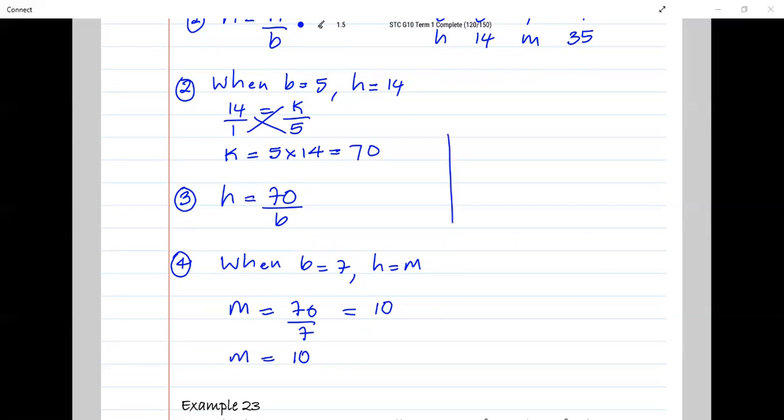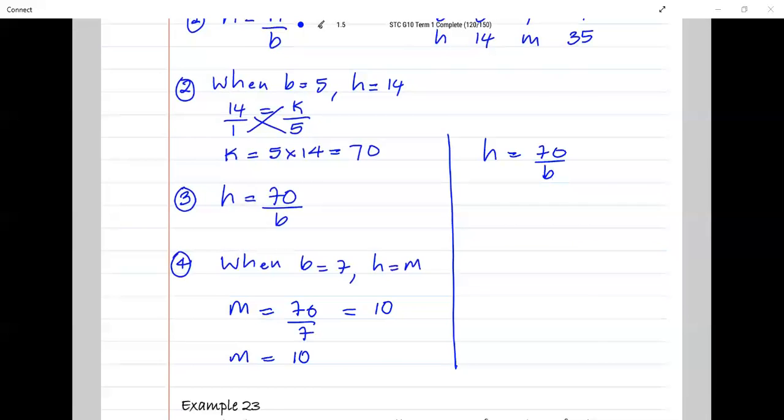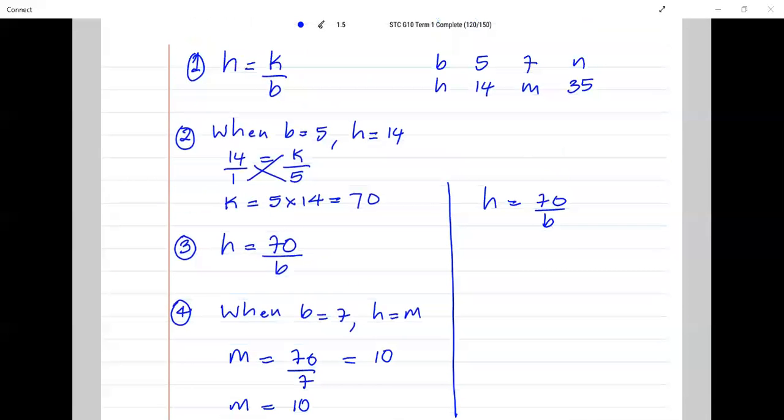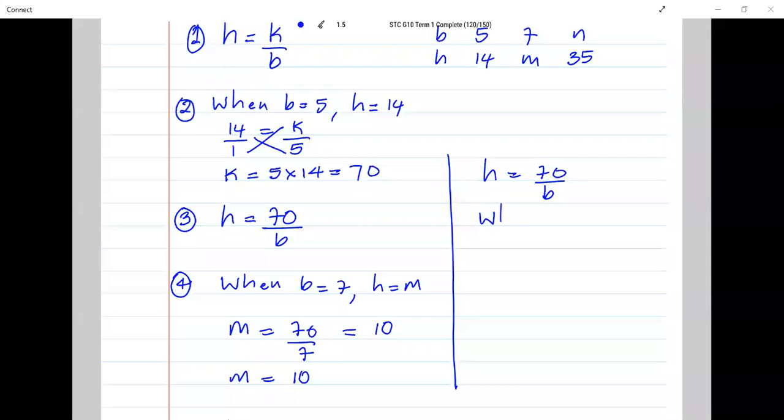Then rewrite the equation, H is equal to 70 over B. So next, we need to find N. I'm going to say when B is equal to N, H is equal to 35.